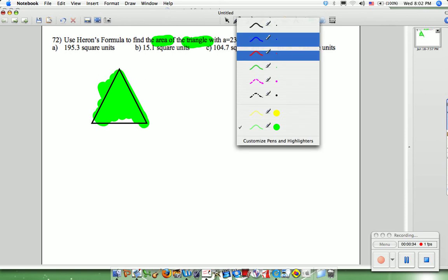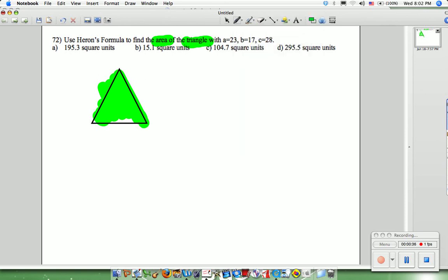We'll use the Heron formula that they told us to use. This is very green so I'm going to use blue. We have side A is 23, side B is 17, and side C is 28.